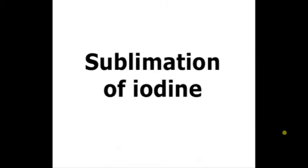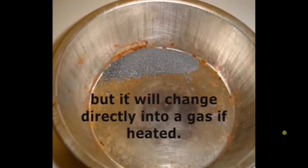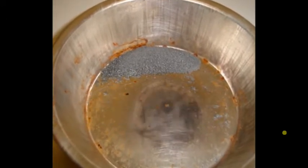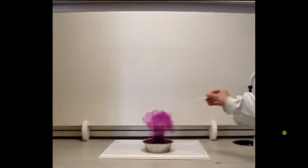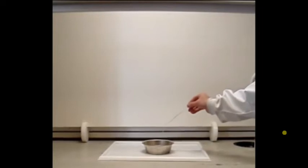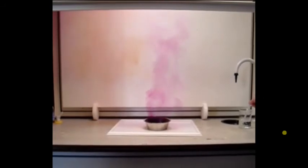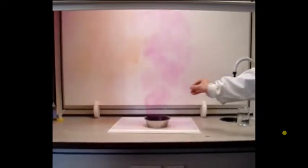So iodine is a solid, and normally when it changes directly into a gas if it's heated. But we can do it a little bit more safely if we mix it with some zinc powder and then we add water. The reason we add the zinc powder is because it acts as a catalyst, so it speeds up the reaction. So you can see that those dull grey little crystals are forming this beautiful purpley magenta type cloud of smoke. So it has changed directly from a solid to a gas and that is called sublimation.